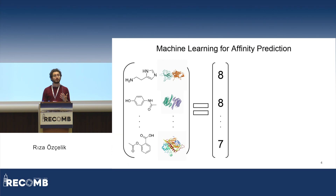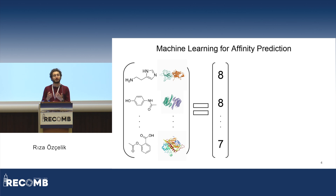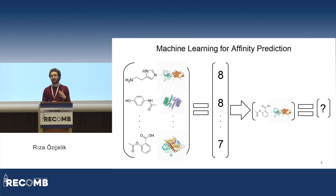One way to do it is to use machine learning, and those models are called affinity prediction models. When you apply machine learning for affinity prediction, you first create a dataset of protein-ligand pairs — or protein-chemical pairs — and their corresponding affinity scores, meaning how strongly they would bind to each other. Once you have this dataset, you train a machine learning model, and then you can ask that model about an arbitrary protein-chemical pair and how strongly they would bind.